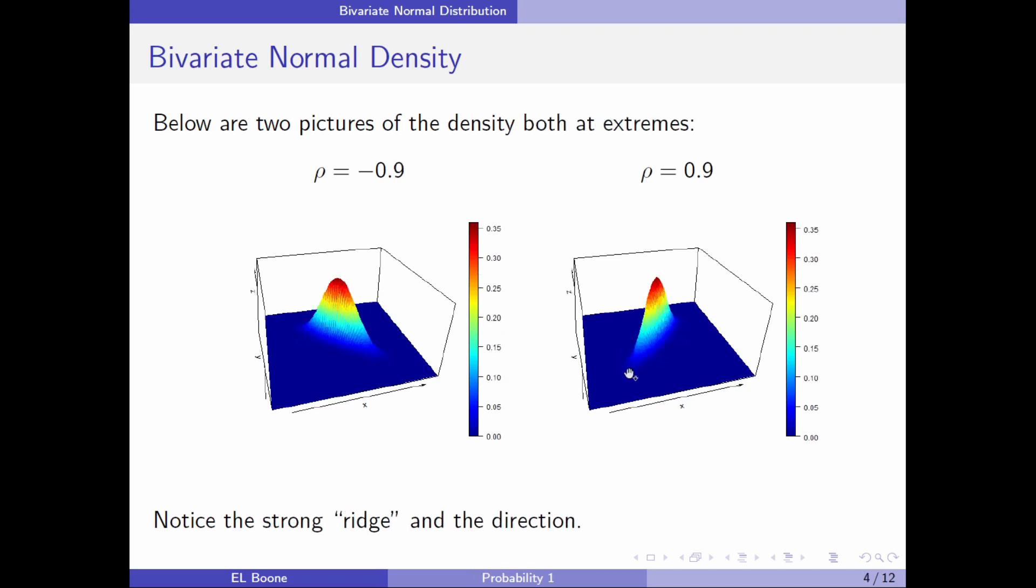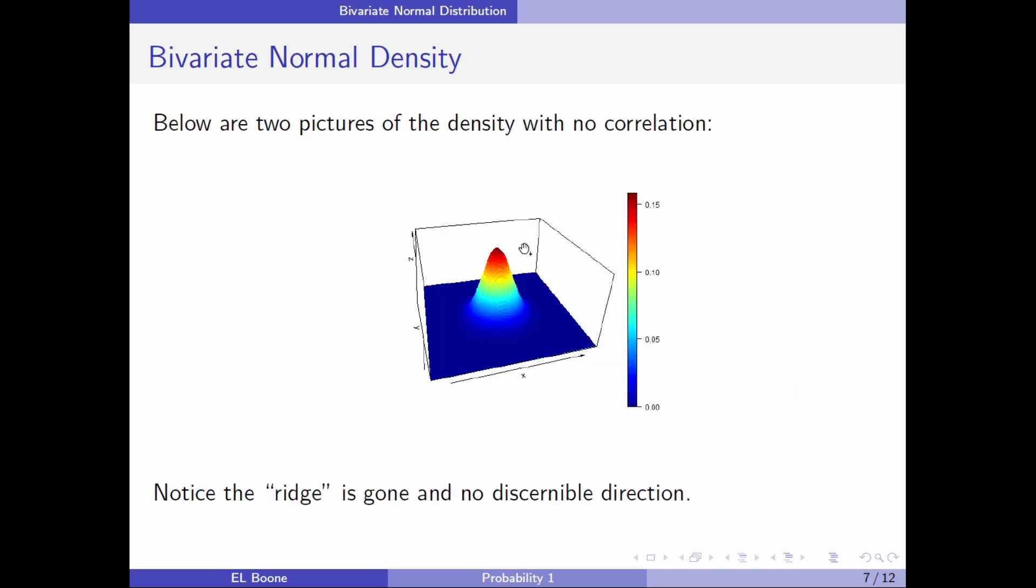That's what this ρ is really doing—it's concentrating the density around the line. If I relax it a little bit more to 0.3, you can kind of see the direction but it's not really apparent. And if we made ρ equal to 0, we get this distribution that has no correlation, and it's basically a normal distribution in every possible way.